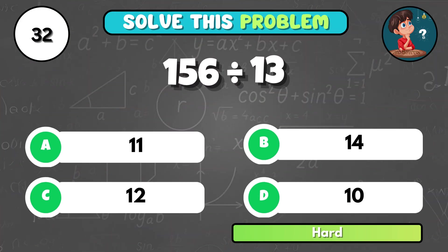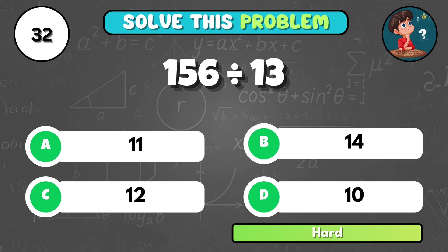If 156 is divided by 13, what is the result? That's C, 12.